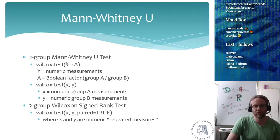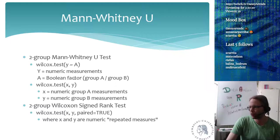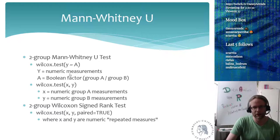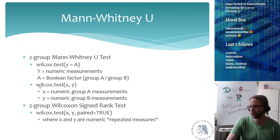In R, you give wilcox.test your measurements and a boolean factor — for example, case or control, or male/female. You can write it as measurements determined by the group factor, or alternatively use the x/y format, which is very similar to the t-test: you give it group one and group two as separate vectors.